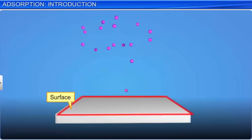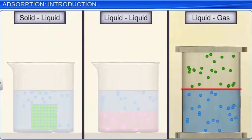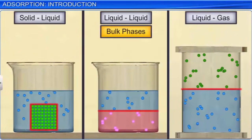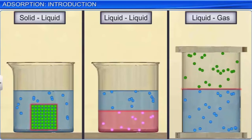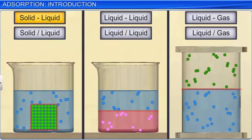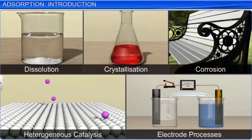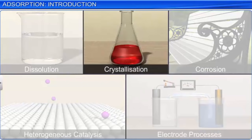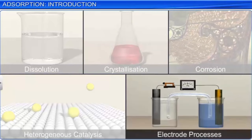An interface is a surface that forms a common boundary between two different phases, such as an insoluble solid and a liquid, two immiscible liquids, or a liquid and an insoluble gas. The two bulk phases refer to the pure compounds or solutions involved in the reaction. The interface is represented by putting a hyphen or slash between the two bulk phases involved, for example solid-liquid. Surface chemistry is important as phenomena like dissolution, crystallization, corrosion, heterogeneous catalysis, and electrode processes occur at an interface.